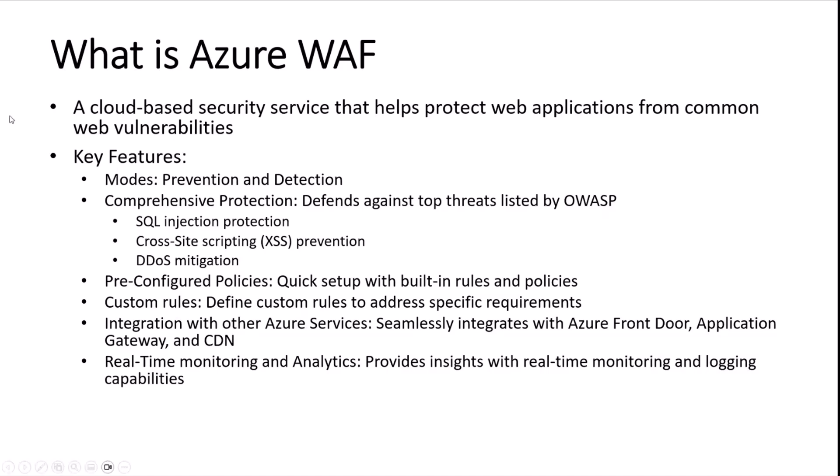So what is Azure WAF? As the definition says, it's a cloud-based web application firewall. The key features of Azure WAF are that it provides two modes: prevention and detection. Detection mode logs the malicious request but still lets it through, so you can analyze how the behavior of your website works, how malicious actors come into the system — you can learn about all those things without preventing them.